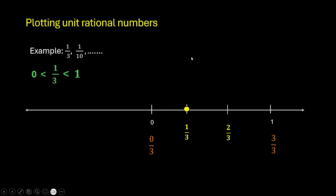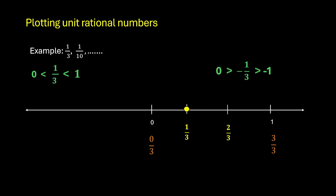How about if we wanted to plot minus 1 by 3? This is negative, so it will lie on the left side of the 0, which means it is less than 0. So minus 1 by 3 is less than 0 and greater than minus 1. Let us mark minus 1. Minus 1 can be written as minus 3 by 3, and the denominator is 3, so we need 3 partitions. This is 0 by 3 and we are going on the left side, so this will be minus 1 by 3 and minus 2 by 3, minus 3 by 3. So let us highlight minus 1 by 3 like this.